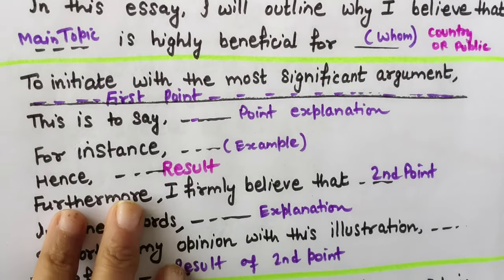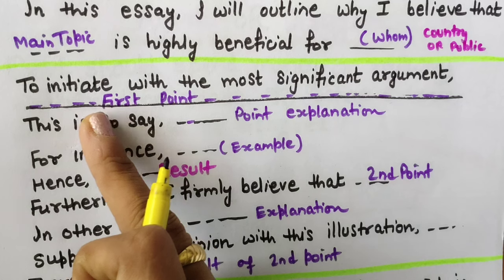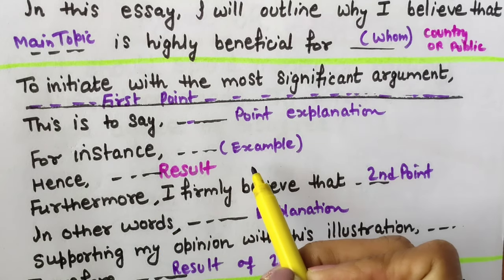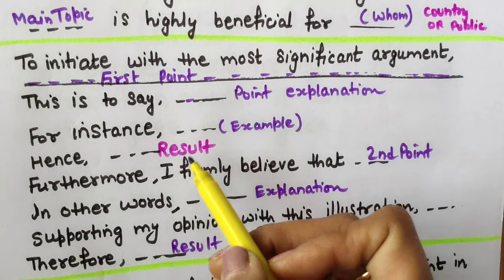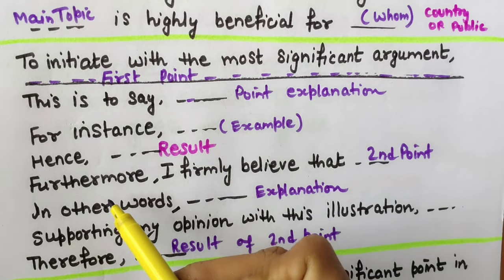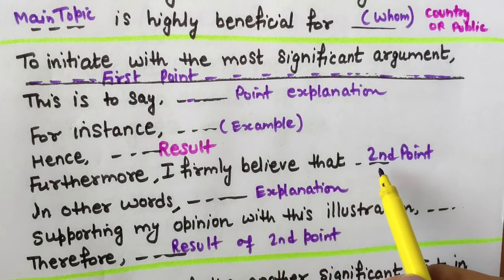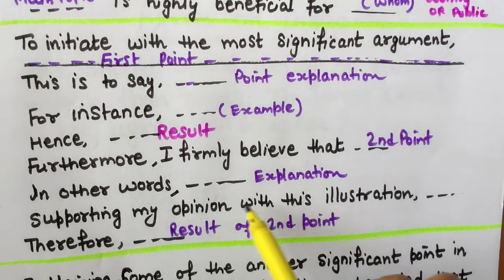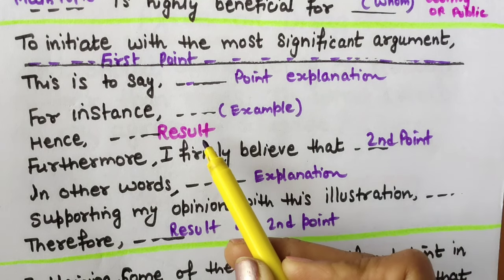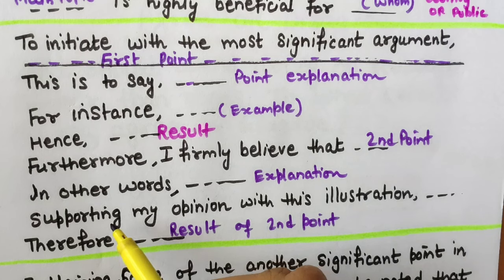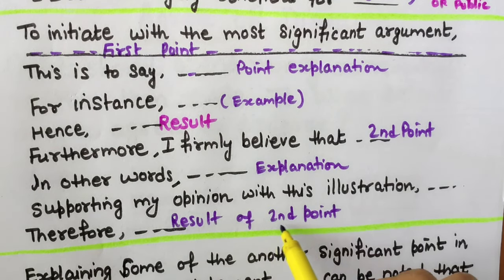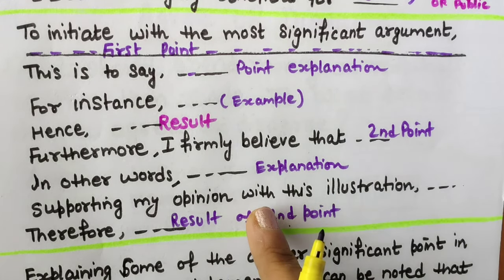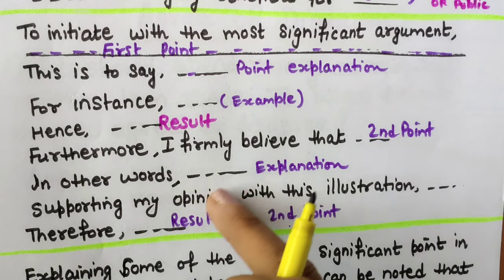In body paragraph one: 'To initiate with, the first most significant argument' — you announce your first point. Then 'This is to say' for the point explanation. Then 'For instance' for the example. Then the result of the first point. Then 'Furthermore' to introduce a second point, with 'I firmly believe that' for the second point explanation, followed by an illustration and then 'Supporting my opinion with this illustration, therefore' for the result of the second point. You can write these two points in the first paragraph, or if you want to focus on one point, you can combine them.